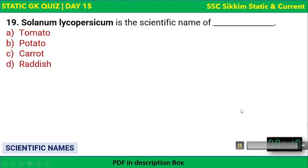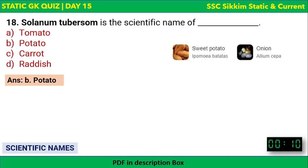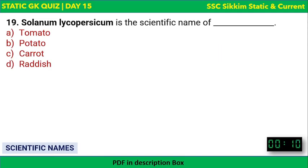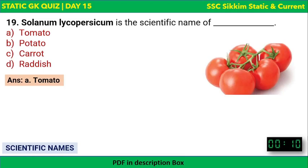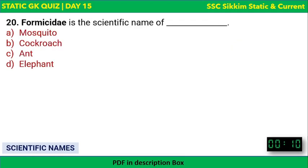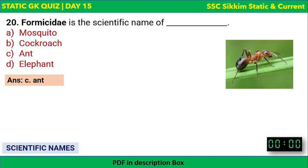Solanum lycopersicum is the scientific name of which plant? Since potato's scientific name is Solanum tuberosum, Solanum lycopersicum is the scientific name of tomato. Next, Formicidae is the scientific name of which creature — mosquito, cockroach, ant, or elephant? The correct answer is ant.